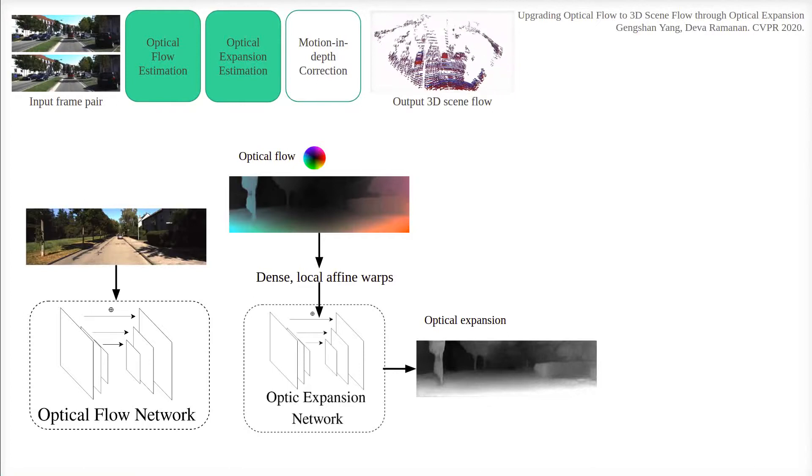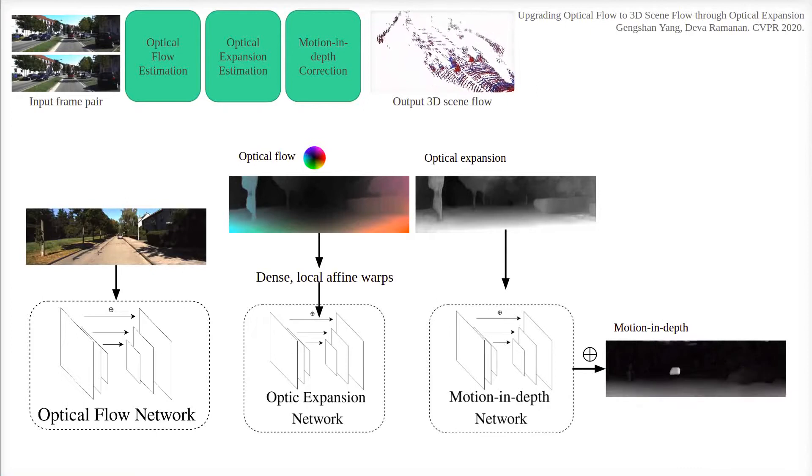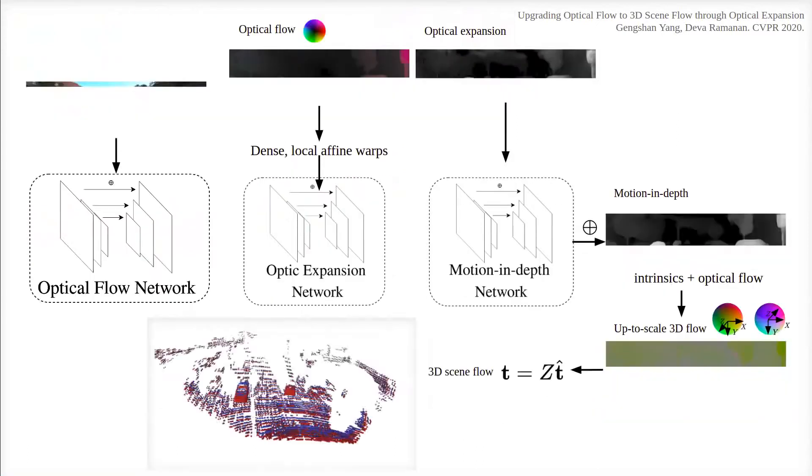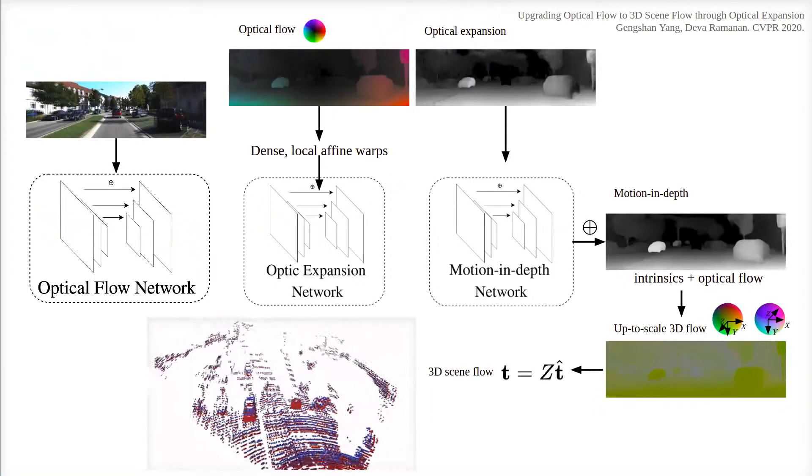As mentioned earlier, the expansion corresponds to changes in depth given an orthographic camera. We then upgrade expansion estimates to actual changes in depth with a lightweight refinement network, and combine it with optical flow to produce an up-to-scale scene flow vector, which can be upgraded to full 3D flow by specifying the depth in one of the two frames using other application-specific methods.